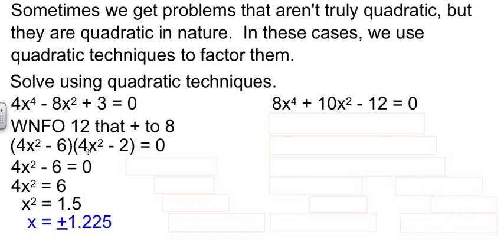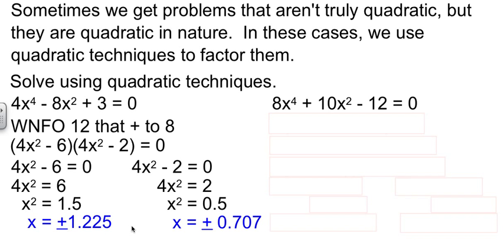Then we'll do the same thing with this factor. 4x² - 2 equals 0. 4x² equals 2. Divide by the 4. And take a square root and we get positive and negative 0.707.